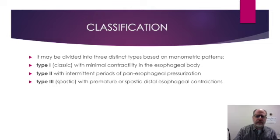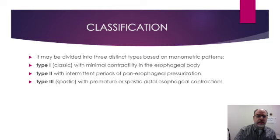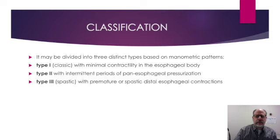Achalasia is divided into three distinct patterns based upon manometric patterns obtained in the endoscopy lab. Type 1 is the classic type of achalasia with minimal contractility in the esophageal body. Type 2 has intermittent periods of pan-esophageal pressurization or contraction. Type 3 is termed spastic achalasia with premature, spastic, discoordinated distal esophageal contractions.